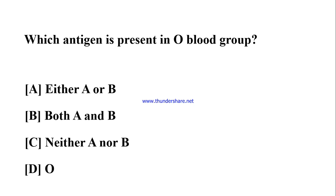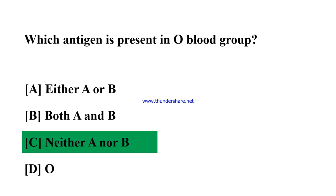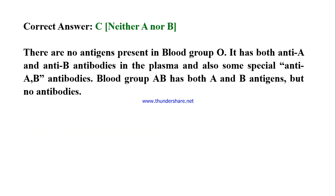Which antigen is present in blood group O? A) Either A or B, B) Both A and B, C) Neither A nor B, D) O. Correct answer: C) Neither A nor B. There are no antigens present in blood group O; it has both anti-A and anti-B antibodies in the plasma, and also some special anti-A,B antibodies. Blood group AB has both A and B antigens but no antibodies.